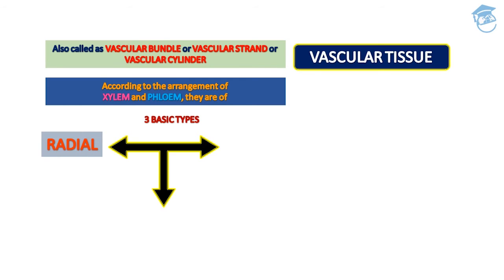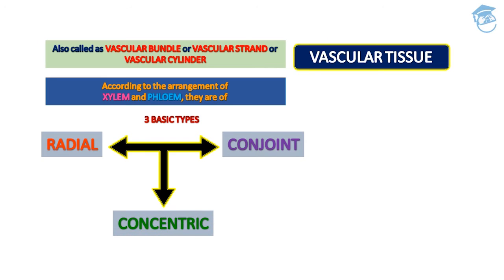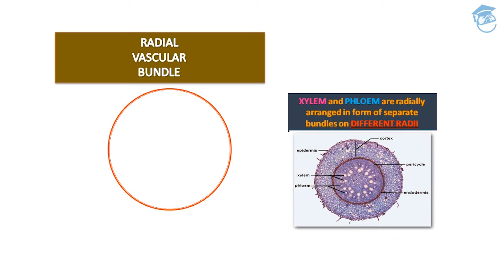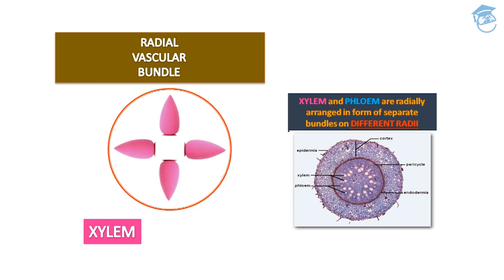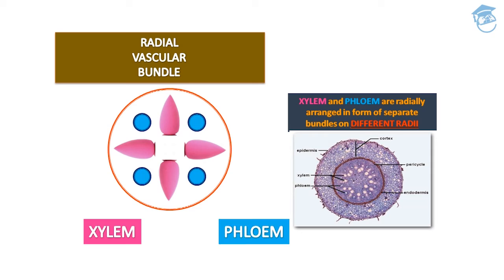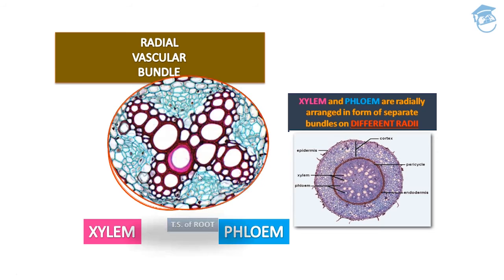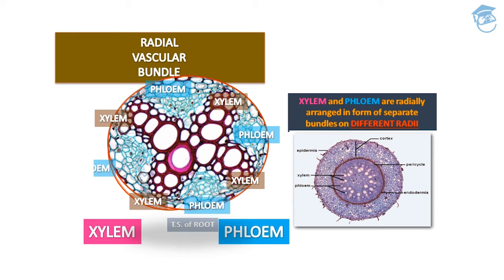According to the arrangement of xylem and phloem, vascular bundles are of three basic types: radial, conjoined (conjoint), and concentric. In the radial vascular bundle, xylem and phloem are radially arranged in the form of separate bundles on different radii. As seen in the transverse section of a root, xylem and phloem alternate on different radii — this type is found in roots.